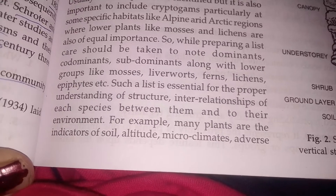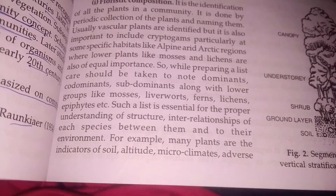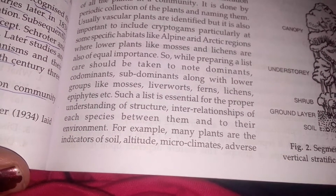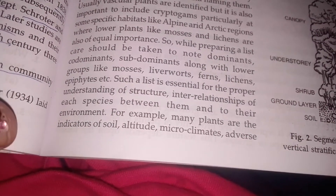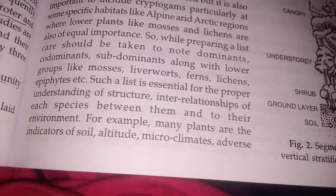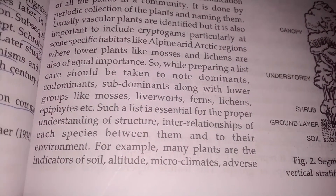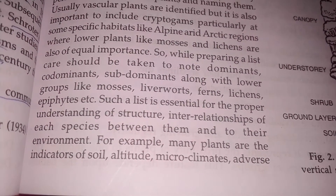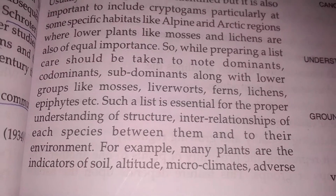This list is essential for the proper understanding of the structure and interrelationship of each species between them and their environment. From this list, we can determine which species are dependent on other species and what relationship each has with the environment. For example, many plants are indicators of soil conditions.